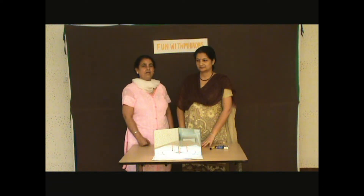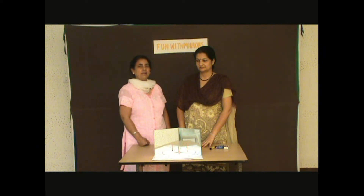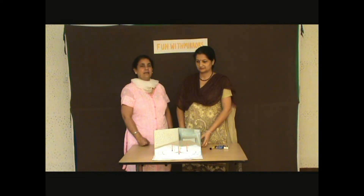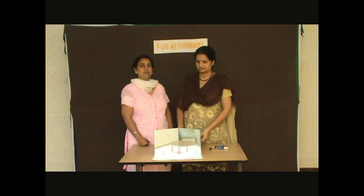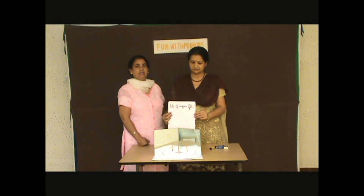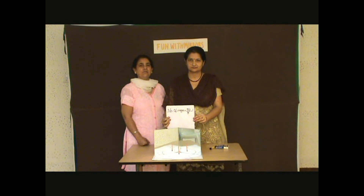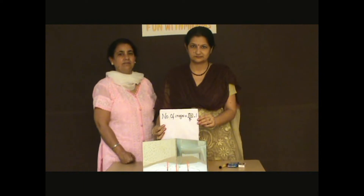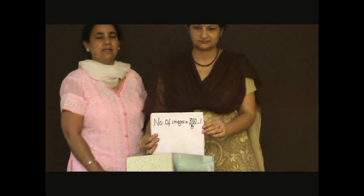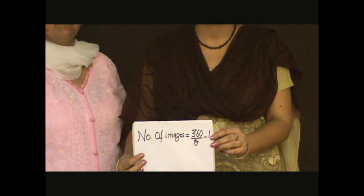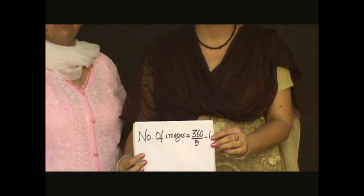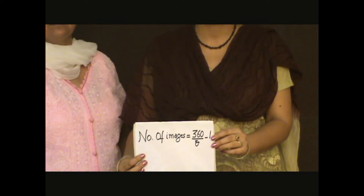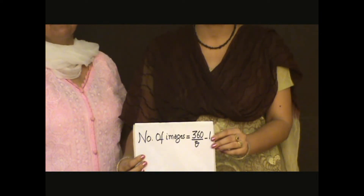Today we will see how we can make more than one image by using two plain mirrors, taking them at different angles. This follows a rule: according to the formula, the number of images formed is equal to 360 divided by theta — which is the angle between the two mirrors — minus 1. Now we will see whether this formula holds good for forming different images.